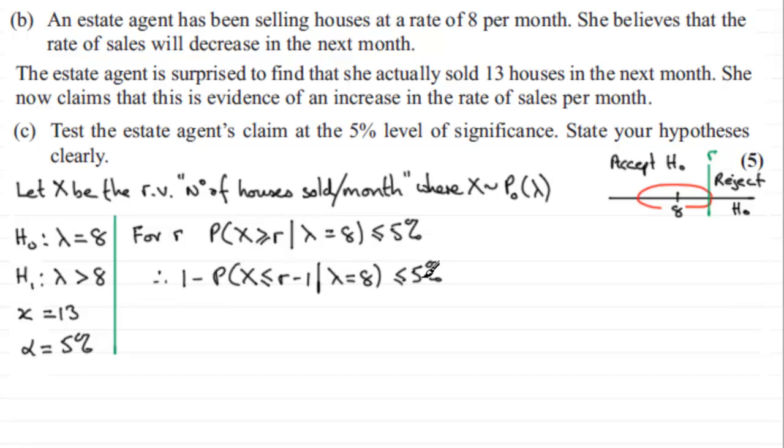Now I just need to rearrange this to make this probability the subject. So if I was to take away our 5% from 1 and add this probability to both sides, I have 1 minus the 5%, 1 minus 0.05 would give us 0.95, equivalent to 95%, and this probability would have to be greater than or equal to that. So the probability that X is less than or equal to R minus 1, given that the mean is 8 or given that the null hypothesis is true, has got to be greater than or equal to 95%, or as a decimal 0.95.